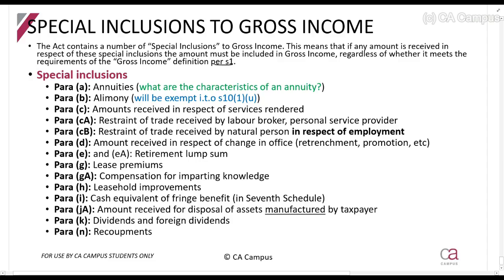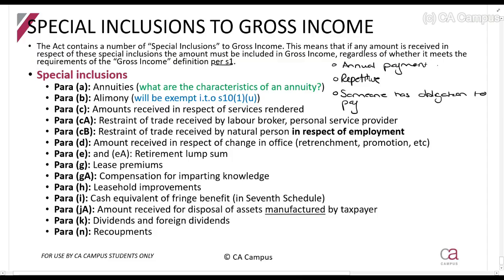The first special inclusion is an annuity — very important. The characteristics of an annuity are: it is an annual payment that is repetitive, and someone has a legal obligation to pay. Annual payment doesn't mean it happens once a year; it can happen every day, every week, every month — but you consider it in terms of a year, so per year you might get 5,000 a month or 60,000 for the year. Repetitive means it needs to happen more than once.